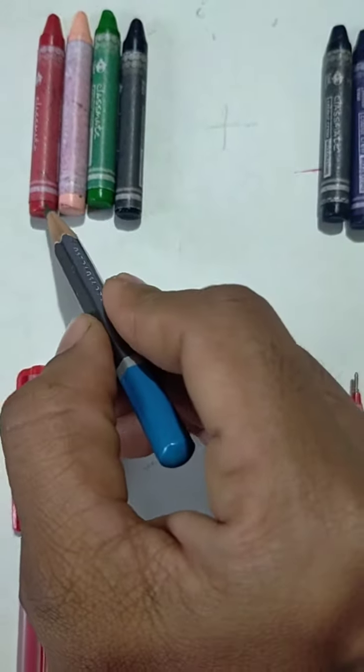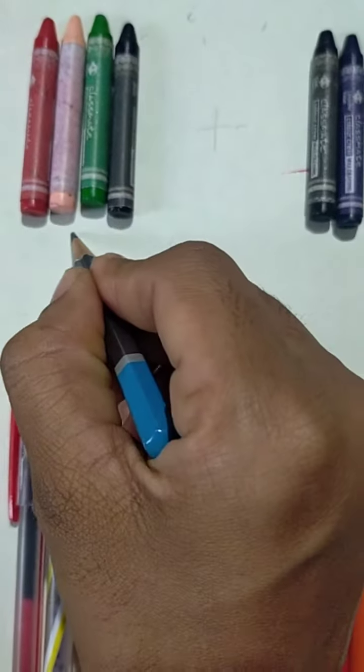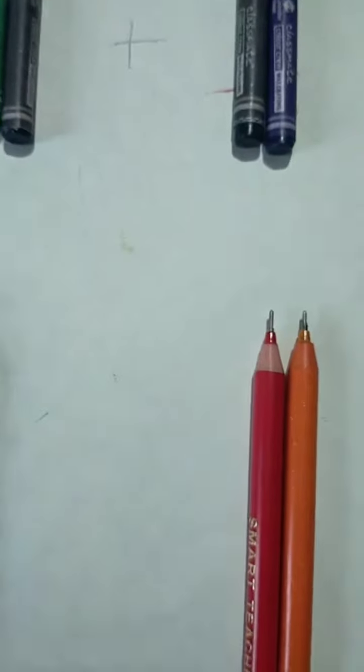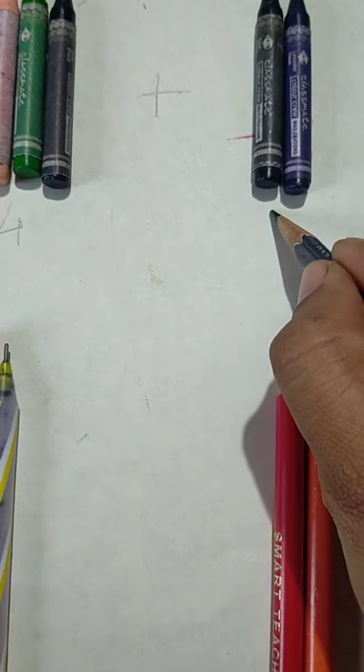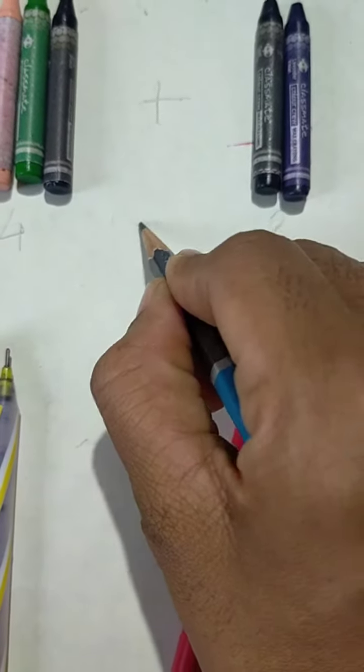Here I have taken crayons and pen. First we will count crayons 1, 2, 3, 4. How many crayons here? And then 1, 2. Okay? So, we have 4 and 2.